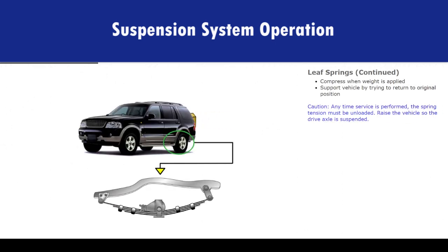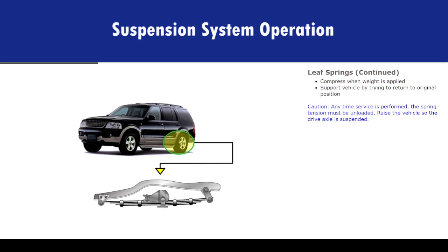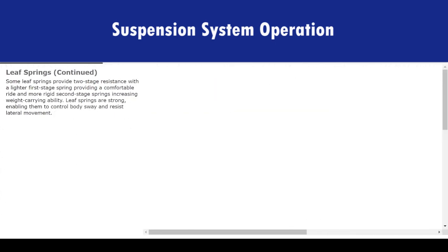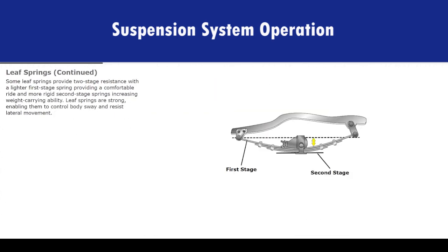When weight is applied to the vehicle, the springs compress. The shackles allow the arched leaves to flatten during their stroke. Because the leaves have a natural tendency to resist flattening, they support the vehicle's weight by trying to return to their original position. Caution: anytime service is performed, the spring tension must be unloaded — raise the vehicle so the drive axle is suspended. Some leaf springs provide two-stage resistance, with a lighter first-stage spring providing a comfortable ride and more rigid second-stage springs increasing weight-carrying ability. Leaf springs are strong, enabling them to control body sway and resist lateral movement.